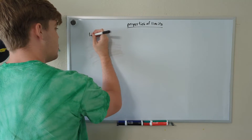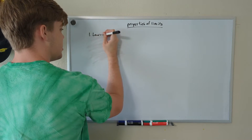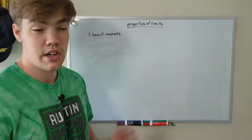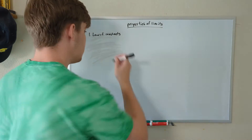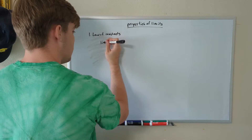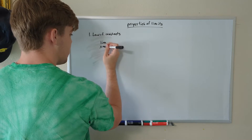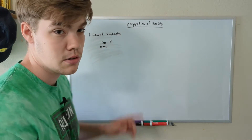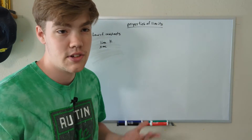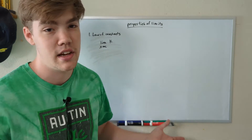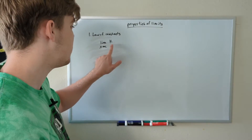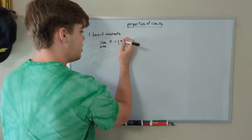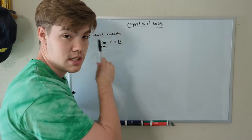Rule number one is the law of constants. The law of constants states that if your limit is as x approaches some constant of a constant — in this case k, so something like 7, 3.5, 69, 1 billion, whatever that constant is — if your function is also a constant, the limit no matter what is just the constant.